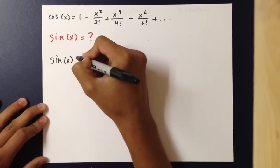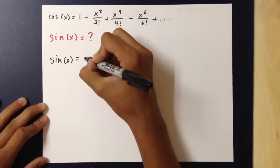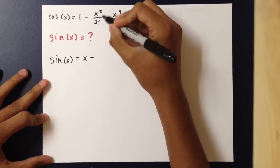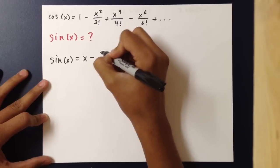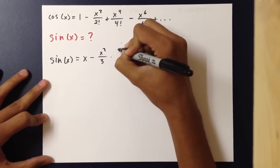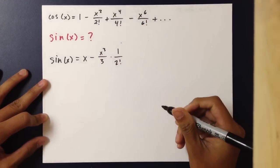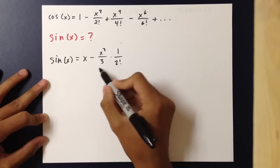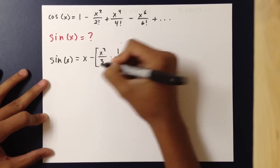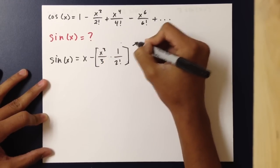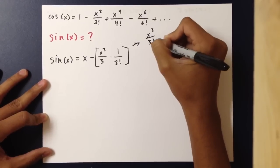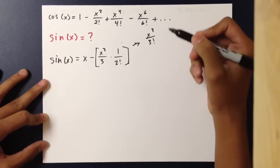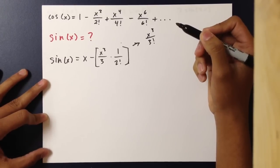The integral of 1 is just x. The integral of x squared over 2 factorial is x cubed over 3 times 1 over 2 factorial. Knowing that 3 times 2 times 1 is just 3 factorial, this simplifies to x cubed over 3 factorial. And this goes on throughout the series as well.